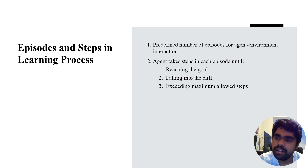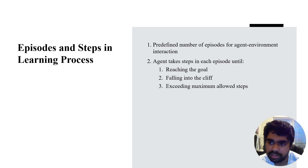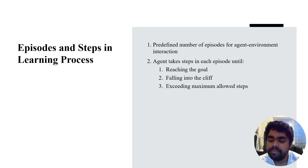The Q-network is the primary network in charge of learning Q-values. It takes the current state as input and produces Q-values for each potential action. The agent then selects an action based on the Q-values predicted by this network.